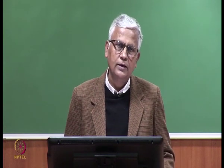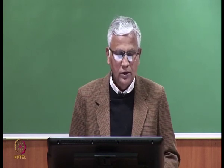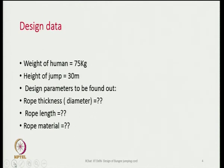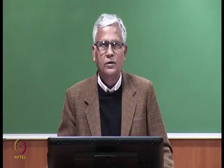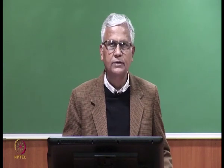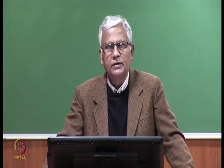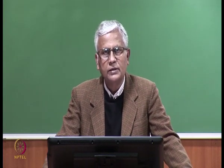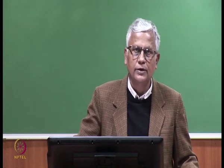This design approach can be used for other types of similar products. The design data given to us is the weight or mass of the human, which is 75 kg, and the height of the jump is 30 meters. The jump could be from a cliff or from a bridge over a river, so there is enough space downwards — 30 meters of space is available. The design parameters we need to find are rope thickness or diameter, rope length, and what rope material to use.